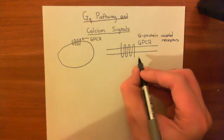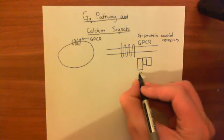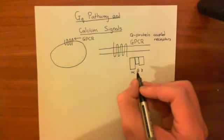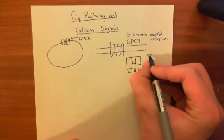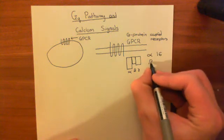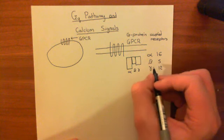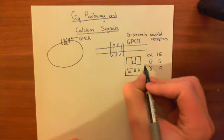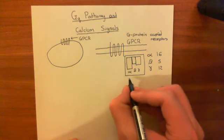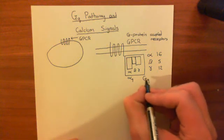G protein coupled receptors are all coupled to heterotrimeric G proteins, which have three different subunits: an alpha subunit, a beta subunit, and a gamma subunit. There are absolutely loads of different heterotrimeric G proteins you can make, because there are 16 different alpha subunits, 5 different beta subunits, and 12 different gamma subunits. The name of the G protein is determined by which alpha subunit you use — if you use the alpha-Q subunit, then your heterotrimeric G protein is known as GQ.